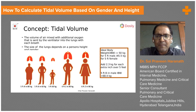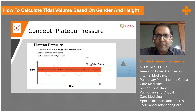This graph shows why we need to adjust lung volume based on height as well as gender. Using a higher-than-expected tidal volume causes lung damage and increases mortality in patients. It is very important to avoid that. The next concept we'll discuss is plateau pressure, which we will also review in the video graphics.